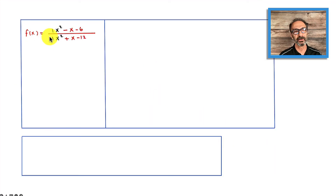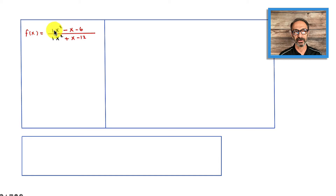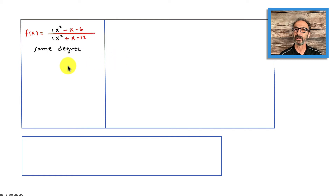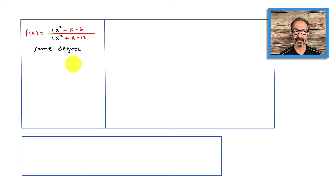So we have the function x squared minus x minus 6 over x squared plus x minus 12. Notice that I'm using a different color for the leading x squared over x squared, and the reason is we do have the same degree. That's one of the cases in rational functions. Overall we have three cases, and in this example I'm going to use the case where we have the same degree on top and on bottom.